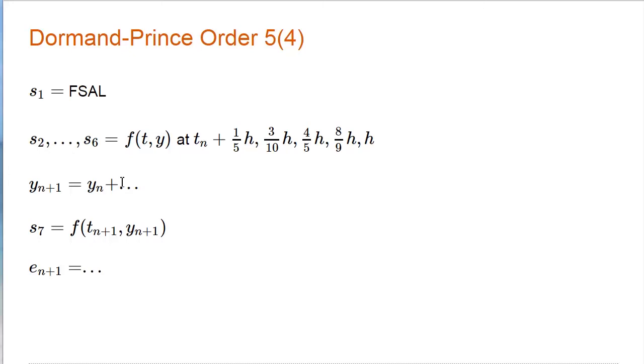These six slopes, linear combinations of them, are used to produce y_n plus 1. The function is evaluated at t_n plus 1 and y_n plus 1 to get a seventh slope. And then linear combinations of these are used to produce the error estimate.